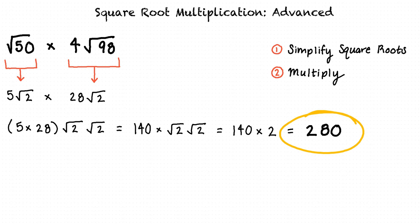So to summarize: to simplify a problem that involves square root multiplication, we first simplify the square root expressions. Next, we multiply the expressions together, and last, we simplify to result in our final answer. Perfect summary — sounds like you really understand this topic.